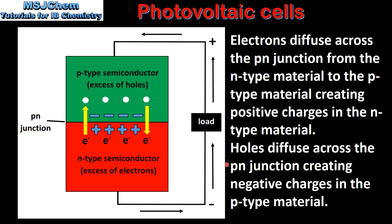Holes also diffuse across the p-n junction, creating negative charges in the p-type material. Here we can see a hole diffusing across the junction, creating a negative charge in the p-type semiconductor.